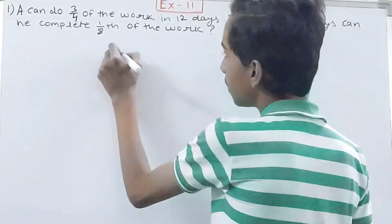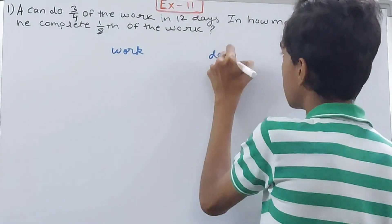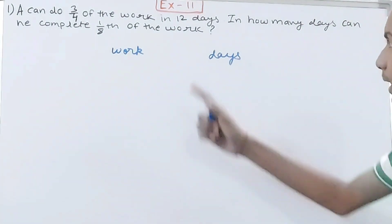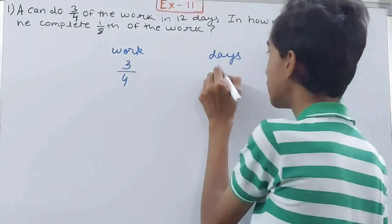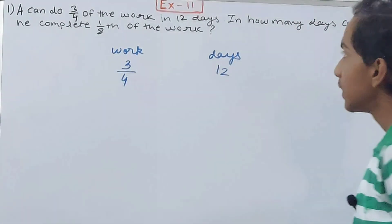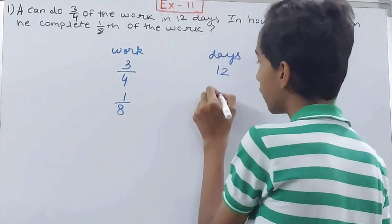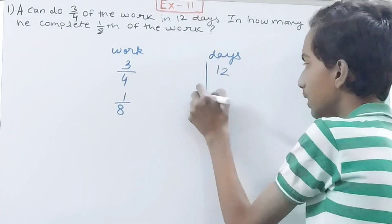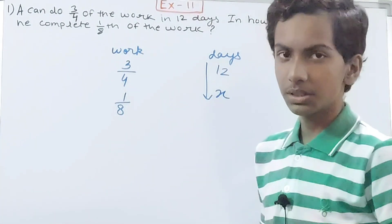I can put this in two columns: work and days required. Work is three-fourths, and he does three-fourths work in 12 days. Then one-eighth of the work — how much time will he take? I put that here with an arrow.